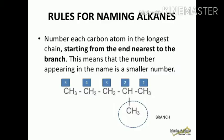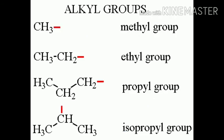Rules for naming alkanes: number each carbon atom in the longest chain starting from the end nearest to the branch, so that the numbers appearing in the name are the smallest possible. For example, 1-2-3-4-5 is pentane, and with a methyl at position 2 it is 2-methylpentane. Alkyl groups are formed when one hydrogen is removed from an alkane: CH3CH2 is an ethyl group, then propyl group and isopropyl group.